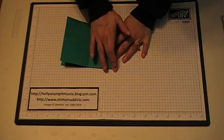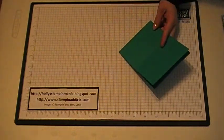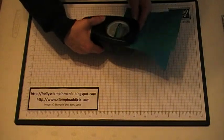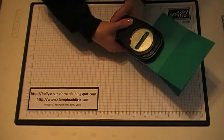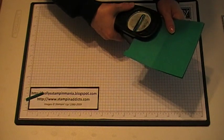And then I'm going to take the word window punch, and I just lined up the edge of the word window punch with the edge of the paper there, and then I punched a hole there, and did the same thing on the other side.